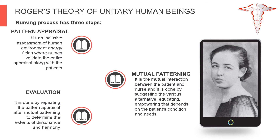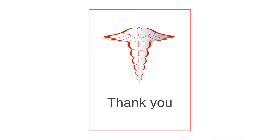In Rogers' theory of unitary human beings, the nursing process has three steps. First, pattern appraisal — an inclusive assessment of human-environment energy fields where nurses validate the entire appraisal along with the patients. Second, mutual patterning — the mutual interaction between the patient and the nurse, done by suggesting various alternatives, educating, and empowering depending on the patient's condition and needs. Lastly, evaluation — done by repeating the pattern appraisal after mutual patterning to determine the extent of dissonance and harmony. That is all for today, thank you.